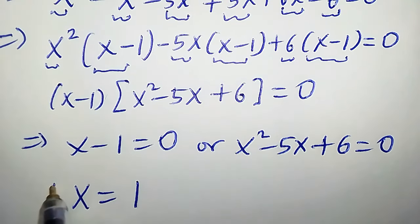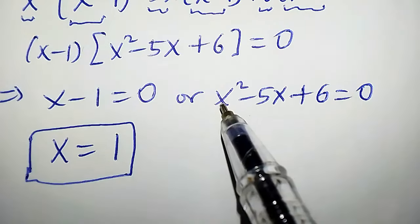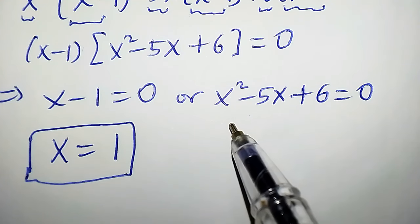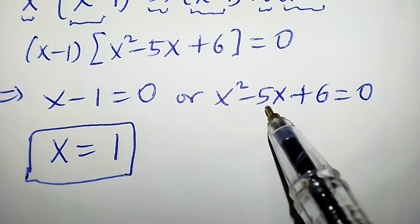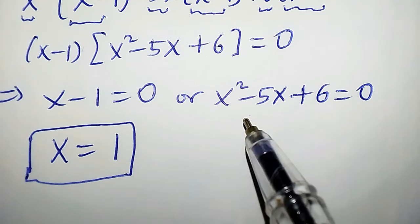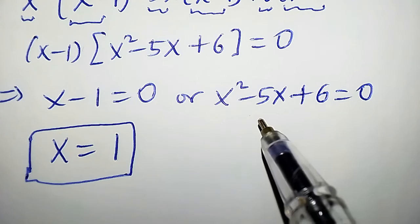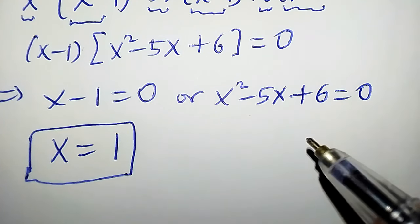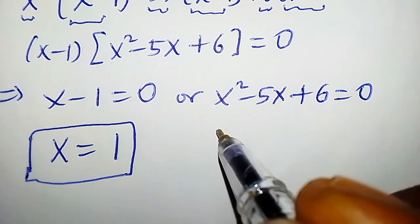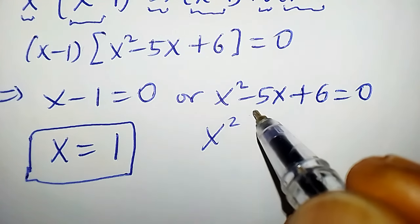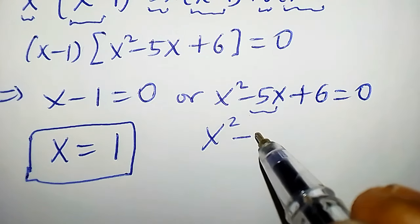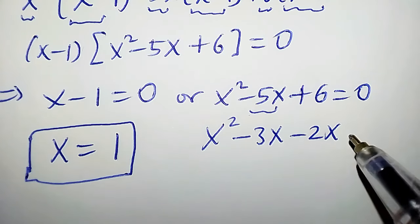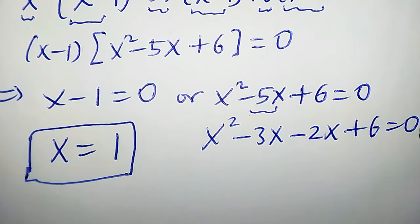To solve the quadratic equation we can use three methods: factorization, the quadratic formula, or completing the square. In this video we apply the factorization method, as it is the most straightforward. So x² - 5x + 6 can be written as x² - 3x - 2x + 6 = 0.